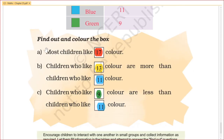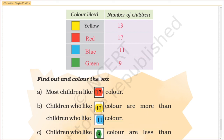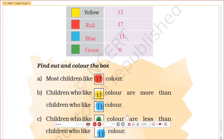Find out and color the box. Most children like dash color. 17 is the highest, so red color is the most liked. More than what color do you like? So yellow or red? The children who like yellow color is more than the children who like blue color. The children who like red color is more than the children who like blue color. The children who like green color are less than the children who like blue color.